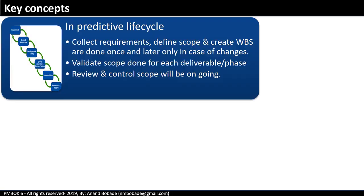Scope management is done differently in predictive and adaptive projects. In the predictive lifecycle, you collect requirements, define scope, and create the work breakdown structure — all done once, and later only in case of changes. Validate scope is done for each deliverable or phase, and review and control scope is an ongoing process.